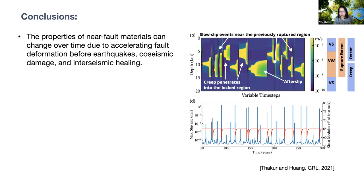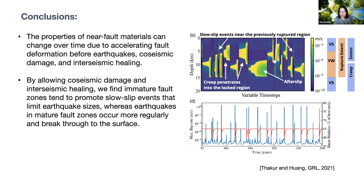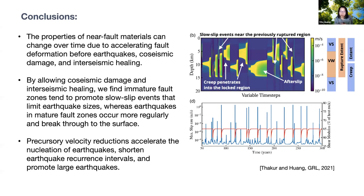In conclusion, near-fault material properties change over time due to processes including accelerating deformation before earthquakes, co-seismic damage, and interseismic healing. Allowing co-seismic damage and interseismic healing shows that immature fault zones promote slow slip events in the velocity-weakening region that limit earthquake sizes, while mature fault zones produce surface-rupturing events with more regular recurrence. Precursor velocity changes accelerate earthquake nucleation and shorten recurrence intervals, and when the characteristic slip distance is small, they can promote the occurrence of larger earthquakes.